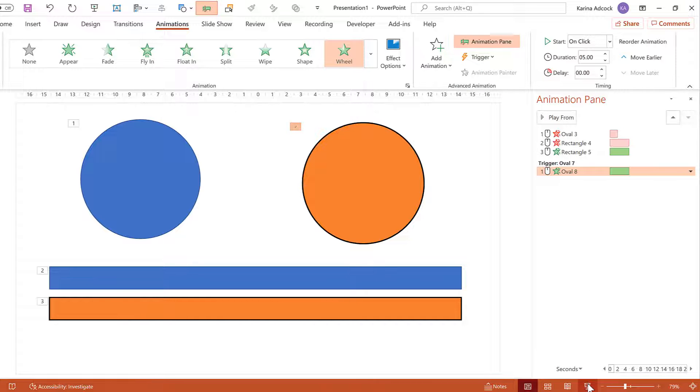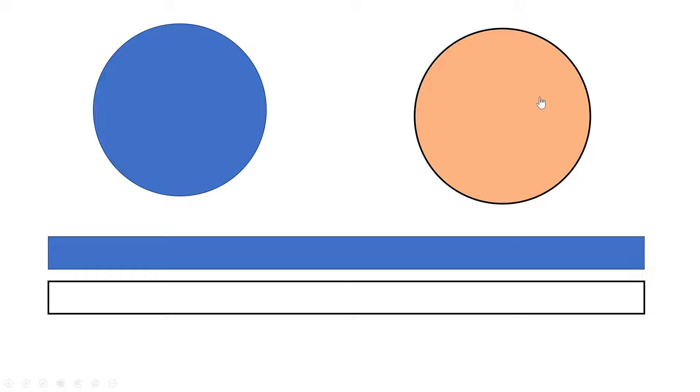If I open up the Slideshow, you can see the lighter orange circle. When I hover my mouse over it, it changes into a hand, and then I can click on it and the darker orange circle will appear.